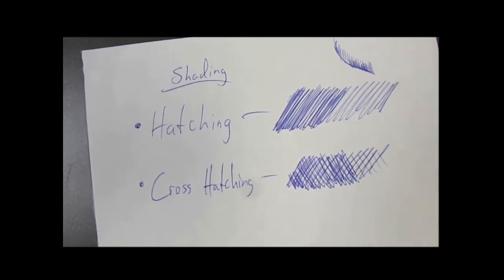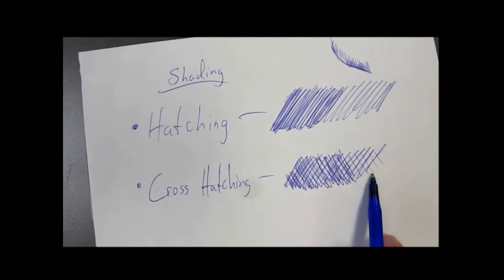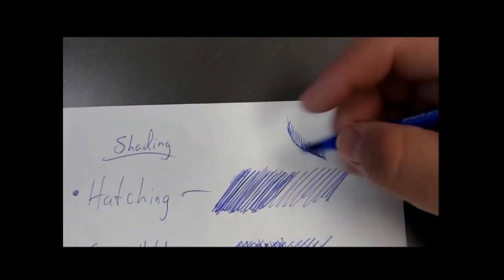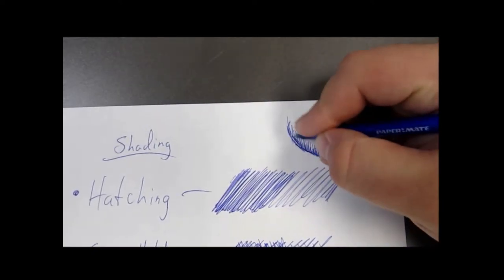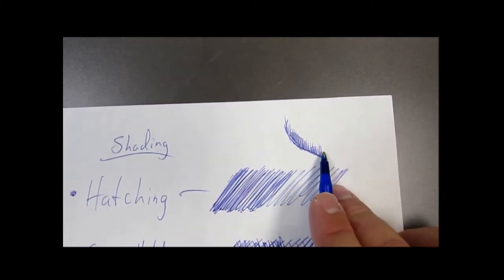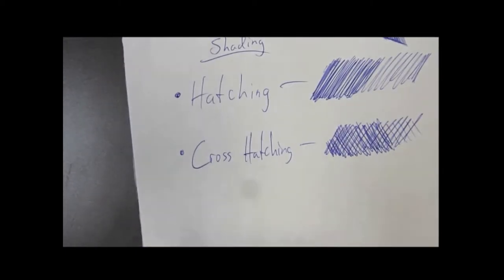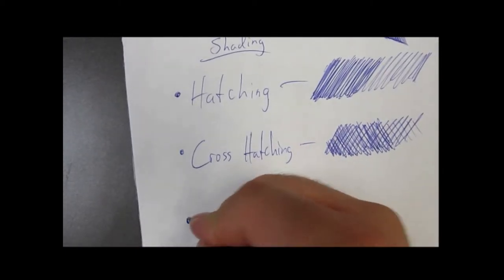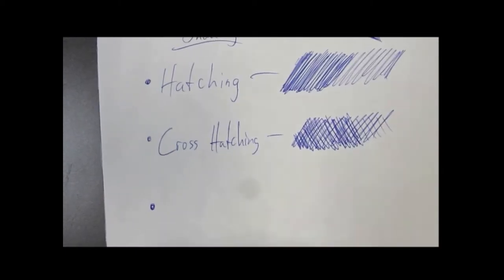Again, closer together is darker shade, farther apart is lighter shade. As I do a cross hatching technique on the side of this beard, this jawline, you can do stubble techniques with this. However, the next step will give you a better stubble application.